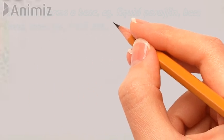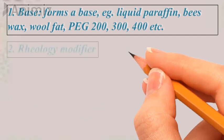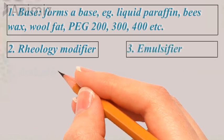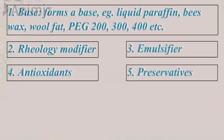Then we have topical ointments. Depending upon the type of ointment, the base can be liquid paraffin, beeswax, wool fat, or PEG 200, 300, or 400. In addition, rheology modifiers, emulsifiers, antioxidants, and preservatives are added to ointments. All these excipients are similar to those used in cream formulations.